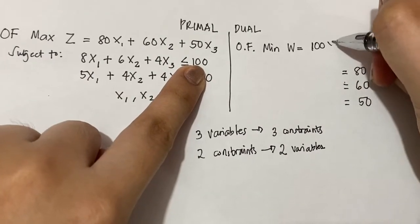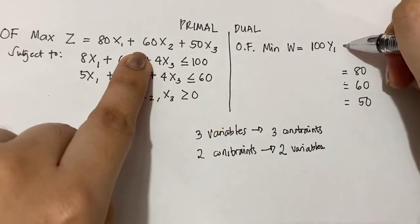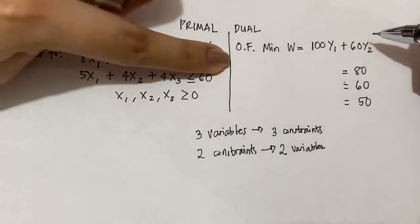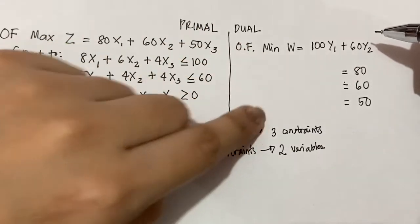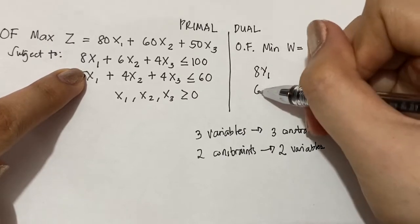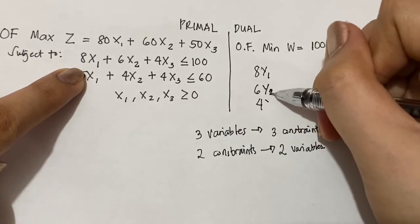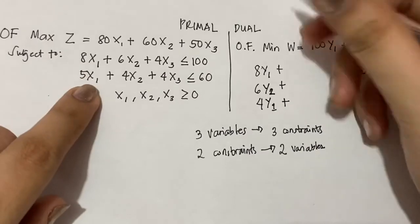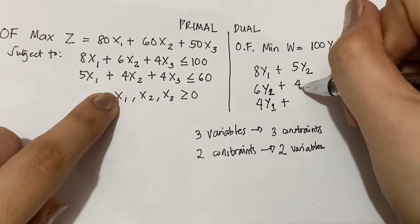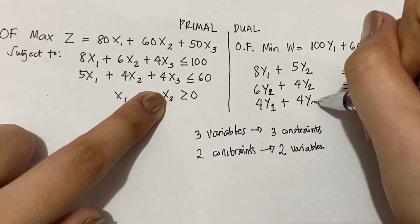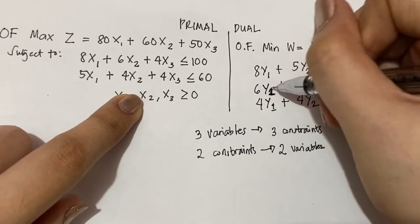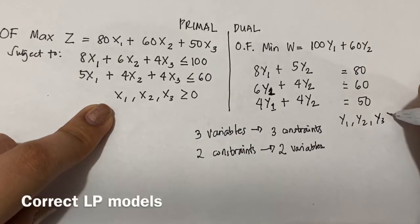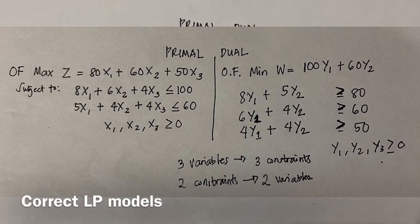If there are only 2 right-hand side values in the primal, you also have only 2 variables in the dual. So the dual objective function is minimize 100 Y1 plus 60 Y2. The horizontal rows from the primal become vertical columns in the dual: 8 Y1 plus 5 Y2, 6 Y1 plus 4 Y2, and 4 Y1 plus 4 Y2 for each respective constraint. Don't forget that Y1 and Y2 must be greater than or equal to 0 for the non-negativity constraint.